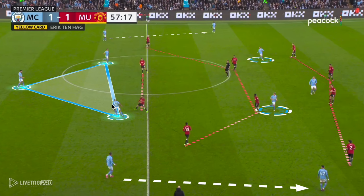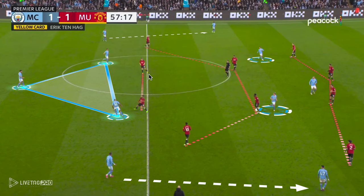The three middle players — Ruben Dias, John Stones, and Rodri — would look to take out the first line of pressure in the central corridors against Manchester United. They would do this by skewing triangles, often seeing Rodri or John Stones dropping into the half-space while the other maintains the central position, skewing the triangle as we'll see in further examples.